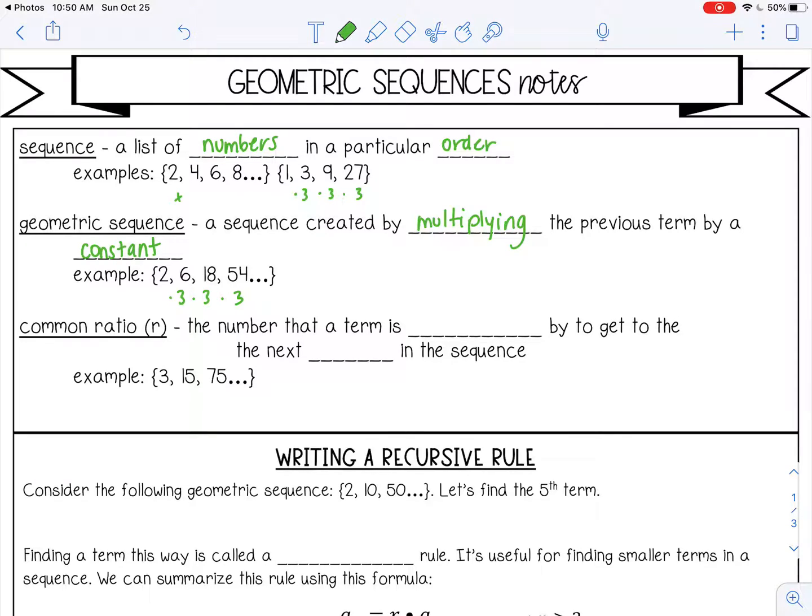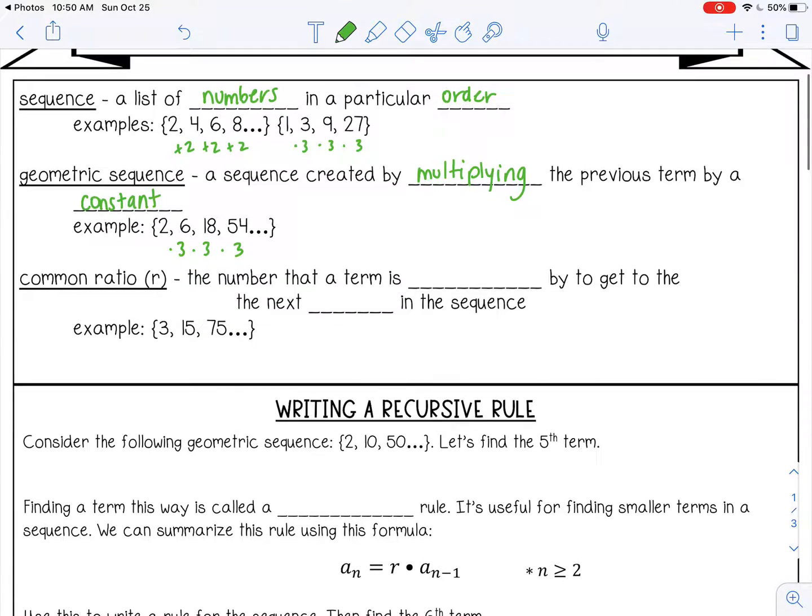However, in this first example, I'm adding 2 each time. So that one would not be geometric. That's actually an arithmetic sequence where you add to get to the next number. Your common ratio, the letter r, is the number that a term is multiplied by to get to the next term in a sequence. So 3, 15, 75. I'm multiplying by 5 each time. So my r is 5.